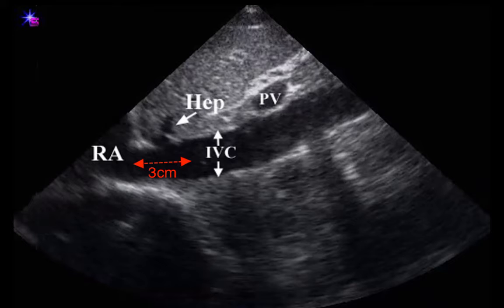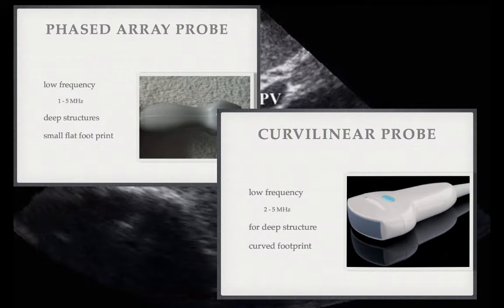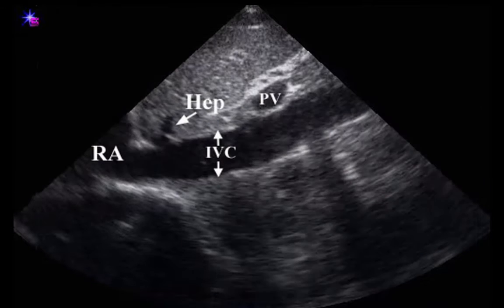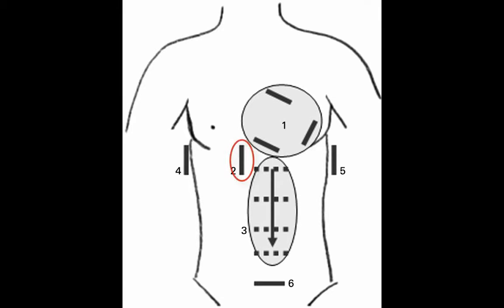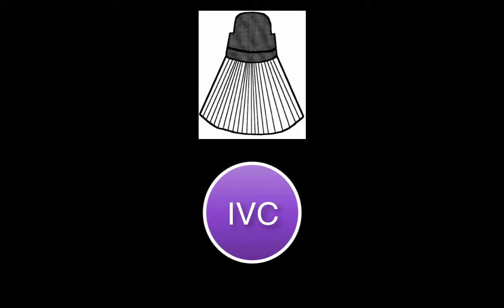For the most consistent results, measurements must be taken 2 cm caudal to the hepatic vein inlet or just caudal to the left renal vein inlet. It is suggested that a low frequency probe, such as a phased array or curvilinear probe, be used for best tissue penetration. Most studies to date have utilized the subxiphoid long axis view, as it takes advantage of the liver as a tissue window and can be found quickly and reliably in most patients.